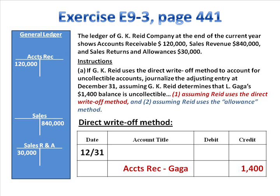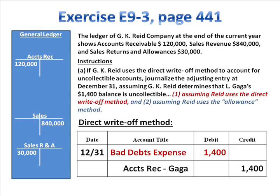Let's assume our company is using the direct write-off method and we want to write off a customer's account. If we were in class, I'd say: what do you credit? And all of you would say: you credit accounts receivable. That should be obvious. When you write off an account, you credit accounts receivable. The question is, what do you debit? What you debit depends on the method you're using. Under the direct write-off method, you debit bad debts expense.